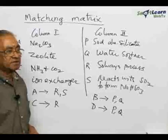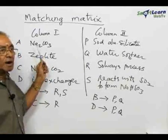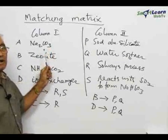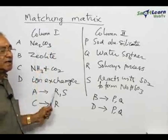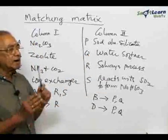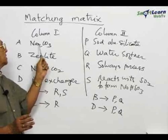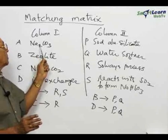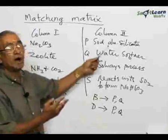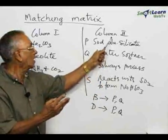The purpose of the question is to identify each one of the items in column 1 — namely A, B, C, and D — with those present on the right. One important condition is that, for example, item A in column 1, namely sodium carbonate, can match with one or more of those presented in column 2.